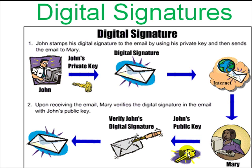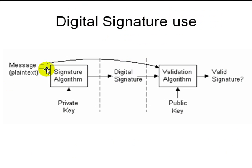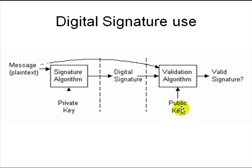Every public key and private key are unique pairs, and only John could have generated them on his computer. The algorithm for digital signatures is straightforward: you have a message or document you want to sign, you use a private key and a document, hash it, and generate a signature. The reader then uses your public key, runs the same algorithm on the document, and checks that the signature matches the one verified with the public key.